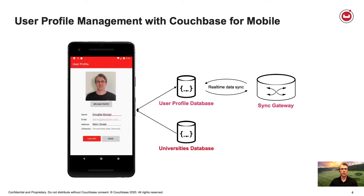I'm going to show this through a user profile management app. This demo is available on our website that you could download and walk through yourself. I'll be walking through building out this app and running it on an Android device. There will be two Couchbase Lite databases in use — one is the user profile database where profile information is stored, configured to sync with a Sync Gateway instance in Google Cloud. There's also an embedded database included with the app that has information about universities, making it easy to look up universities while creating your user profile.